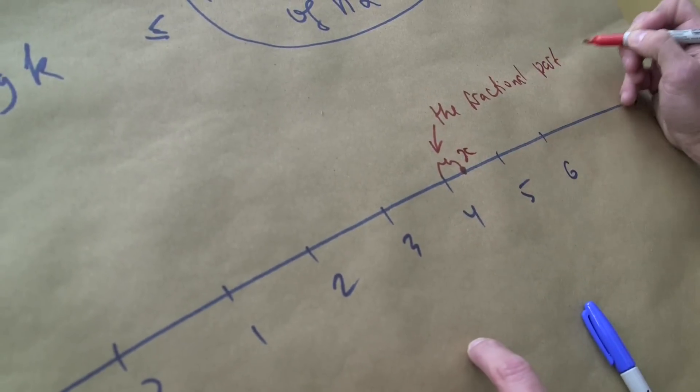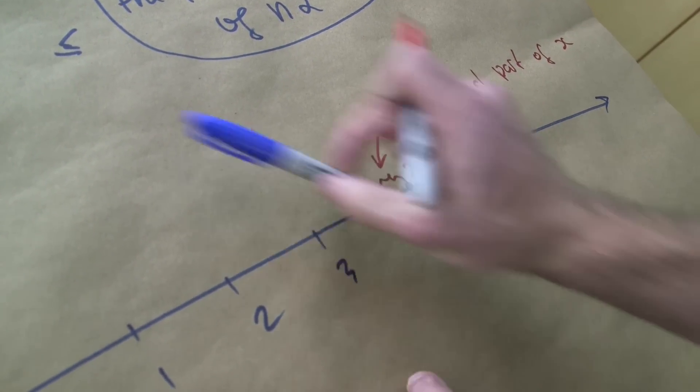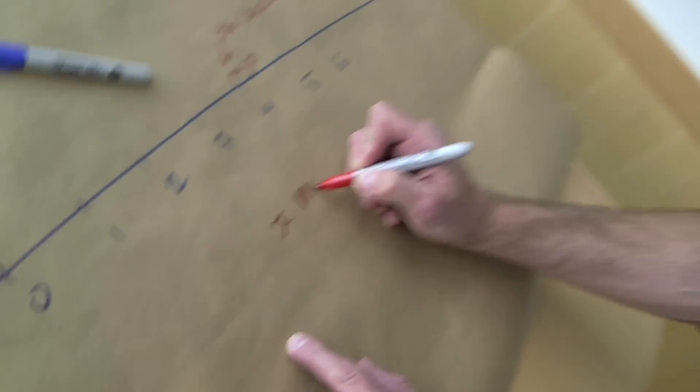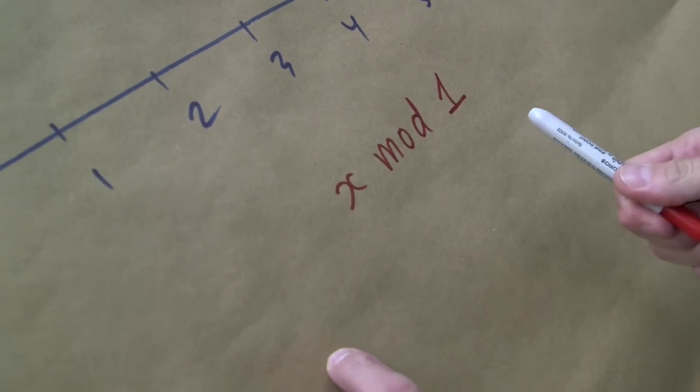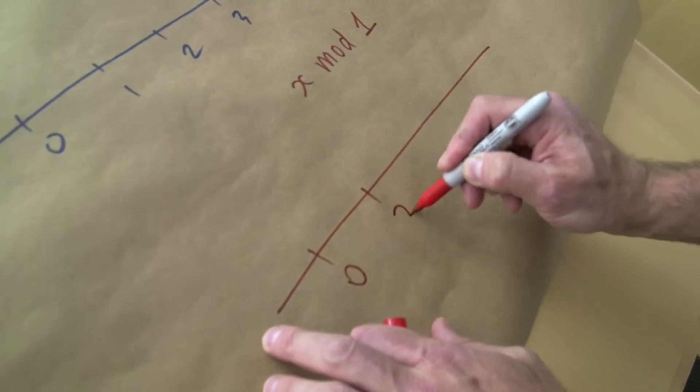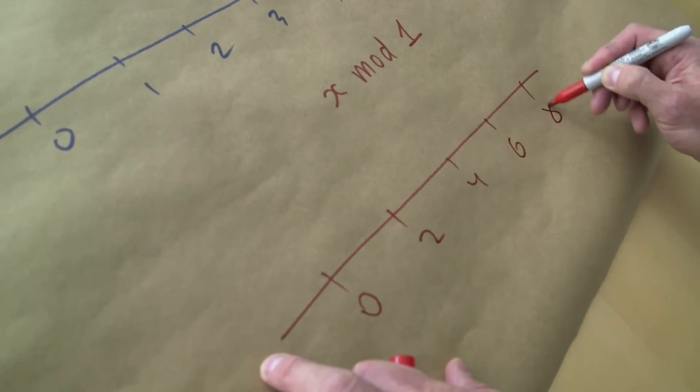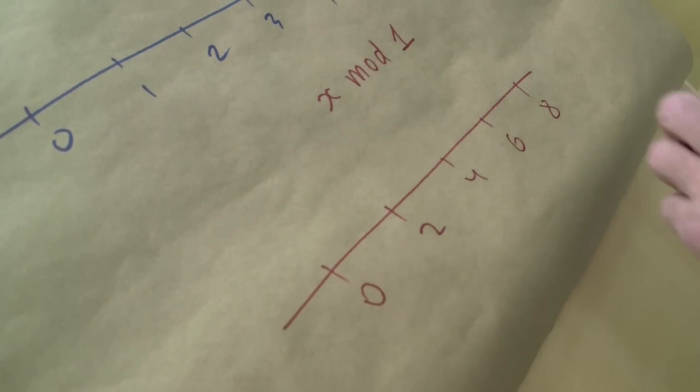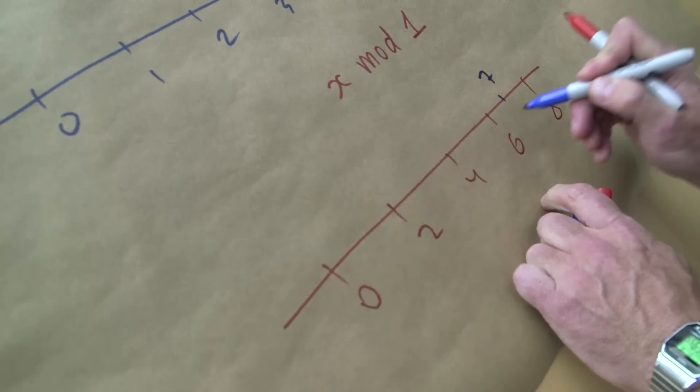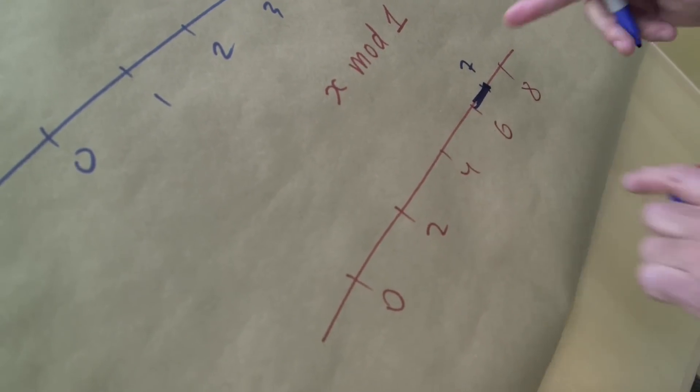Then we say that this difference between the nearest integer and this is called the fractional part. So if this is x, this is the fractional part of x. Sometimes it is called x modulo 1. It's like a remainder. If you divide 7 by 2 you got a remainder 1. When we divide 7 by 2 we have 0, 2, 4, 6, 8, these are even numbers, and here we have 7 the outcast.